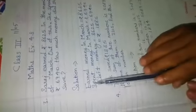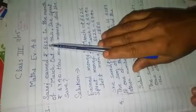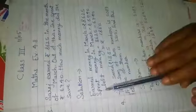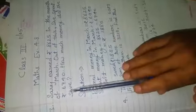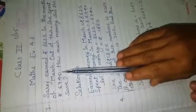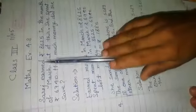Solution. Earned money in March is Rs. 8,625. She spent money in March is Rs. 6,740. To find left money, we subtract spent money from earned money.